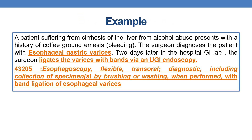Example: A patient suffering from cirrhosis of the liver from alcohol abuse presents with a history of coffee ground emesis — indicating bleeding. The surgeon diagnoses the patient with esophageal gastric varices. Two days later in the hospital GI lab, the surgeon ligates the varices with bands via upper gastrointestinal tract endoscopy — that is esophagoscopy performed with band ligation of varices. The correct CPT is 43205: esophagoscopy, flexible, transoral, with band ligation of esophageal varices.